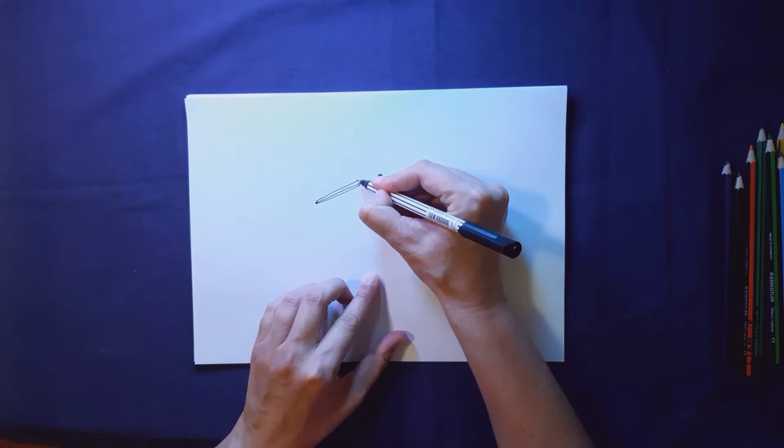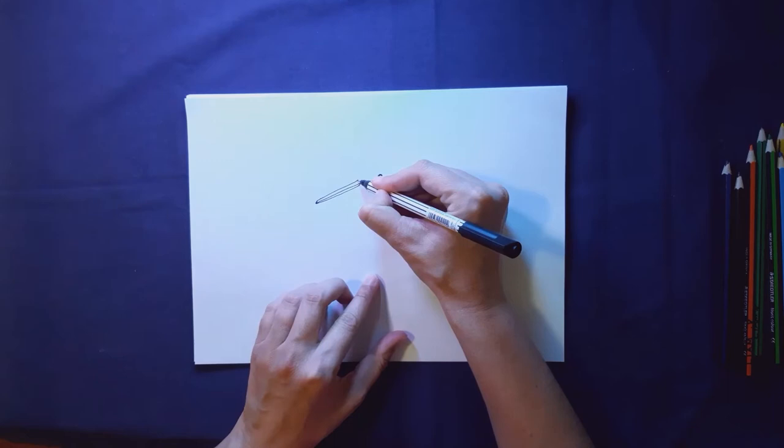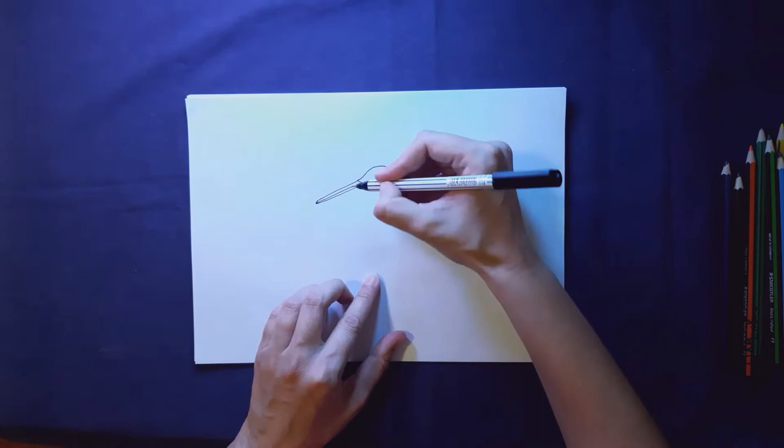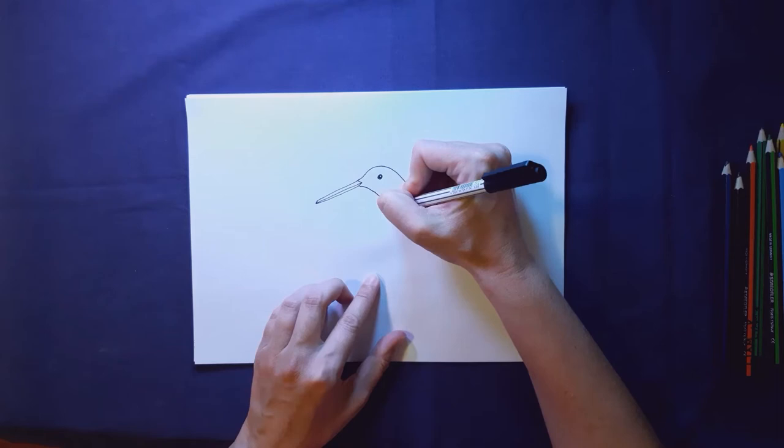All right we're going to go over the top of his head. I'm going to start with a gentle curve coming up over and down, and this one is a beautiful elegant little curve. He's a very dainty bird.